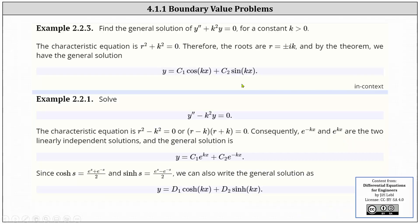Recall two previous examples. In one example, y double prime plus k squared y equals zero for some constant k greater than zero. The characteristic equation is r squared plus k squared equals zero, giving us two complex roots. Therefore, the general solution is y equals c one cosine of kx plus c two sine of kx. We also had y double prime minus k squared y equals zero, where the characteristic equation is r squared minus k squared equals zero, giving two real roots, and the general solution is y equals c one e to the kx plus c two e to the negative kx. In either case, we had two arbitrary constants.